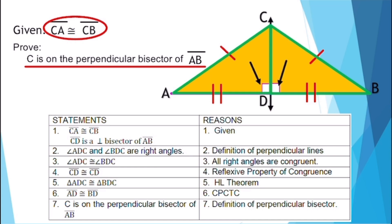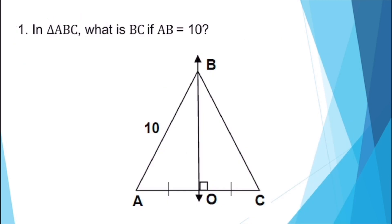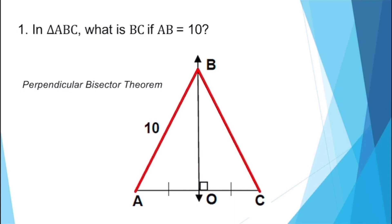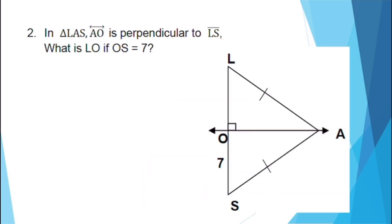Now that we are done with the proof, let us apply the perpendicular bisector theorem and its converse to prove congruent segments in a triangle. For our first example, in triangle ABC, what is BC if AB is equal to 10? Using the perpendicular bisector theorem — if a point is on the perpendicular bisector of a segment, then it is equidistant from the endpoints — line segment AB is congruent to line segment BC. Since AB equals 10, therefore BC also equals 10.